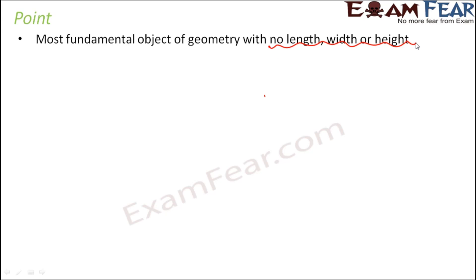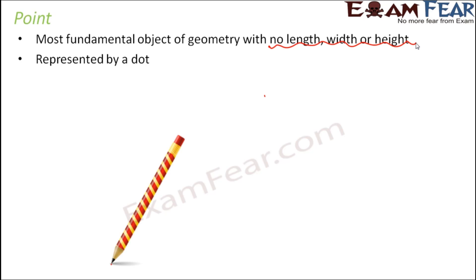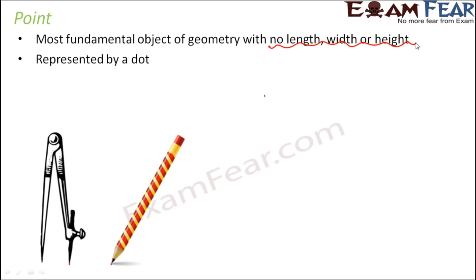You just cannot measure its length or breadth or height. It is represented by a dot. You take a pencil and touch the tip of the pencil on a white sheet of paper — what do you get? You see a black dot, and that dot represents a point. So think of the tip of a pencil or the tip of a compass — these represent dots.